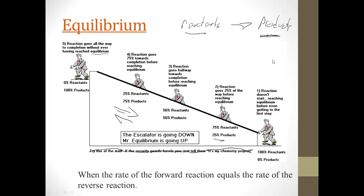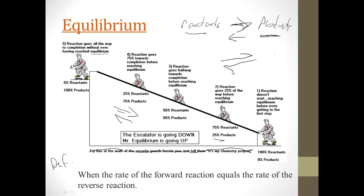Equilibrium is when the rate of the forward reaction equals the rate of the reverse reaction — that's the definition. We write it with two arrows pointing in opposite directions, frequently drawn like this.